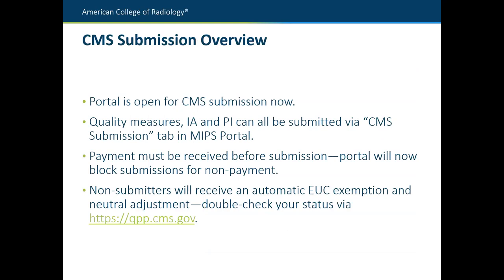To give a quick overview of your CMS submission: the portal is open now. If you're ready to submit, you can do it now. All of your MIPS performance categories can be submitted through our portal — that includes quality measures, improvement activities (IAs), and promoting interoperability (PI). All of that can be submitted from the CMS submission tab in the MIPS portal. Most of you are probably exempt from PI, so you can ignore that section, but it is there for anybody who needs it.